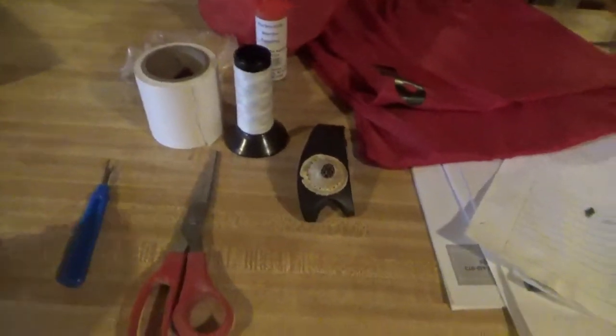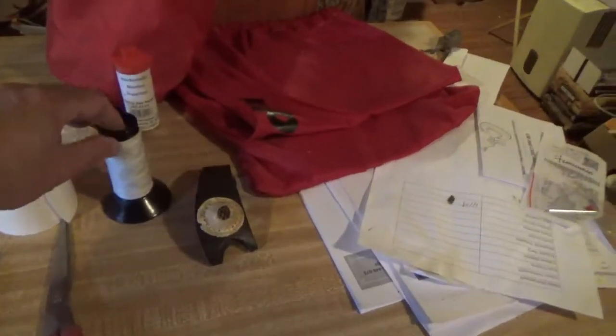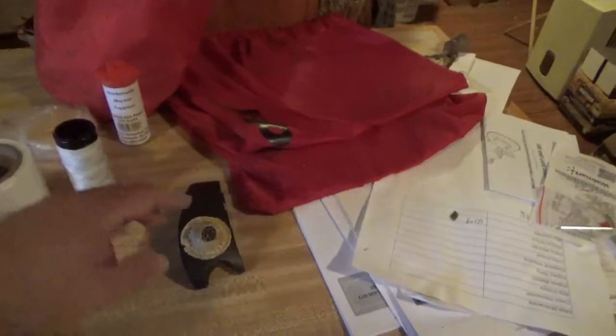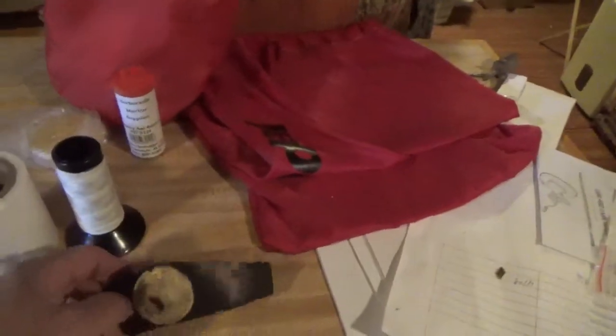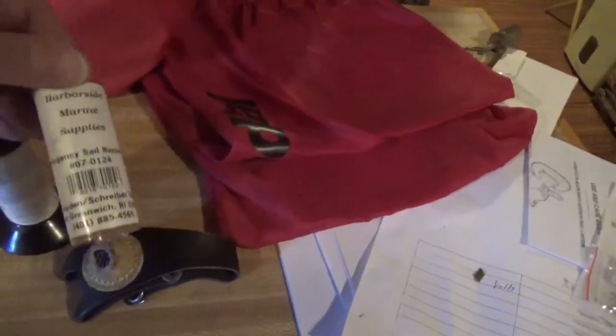Okay, you'll need to get some tools together. Got a seam ripper, a pair of scissors, some sticky Dacron, some Dacron thread. This is a big roll—you can do with a little spool if you want. Sailmaker's palm come in handy. You might not need it, but if you have it it's great. And some sail needles.